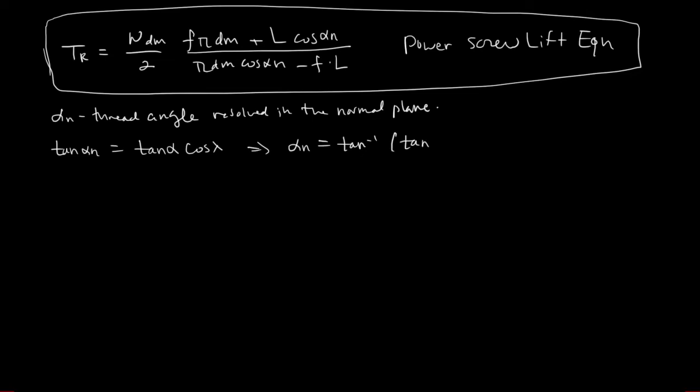If we are given the thread angle rather than the thread angle resolved in the normal plane, we must relate the two. The relationship is: tan(alpha_n) = tan(alpha) · cos(lambda). So we can find alpha_n as the inverse tangent of tan(alpha) · cos(lambda) and use that in the equations above.